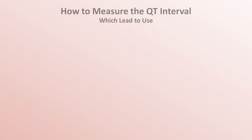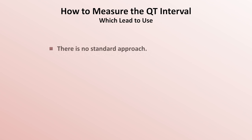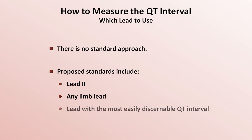Which lead should be used when measuring the QT? There is no standard approach, though proposed standards include lead 2, any limb lead, the lead with the most easily discernible QT interval, and the lead with the longest QT interval.